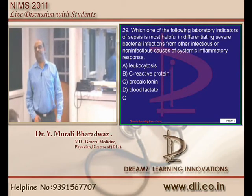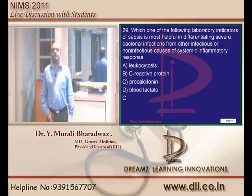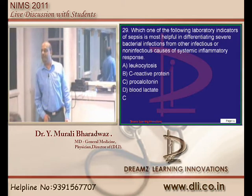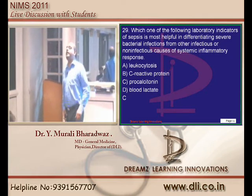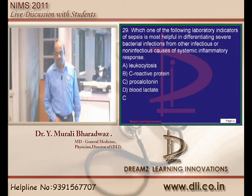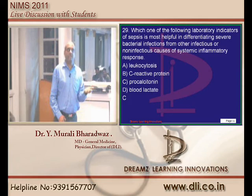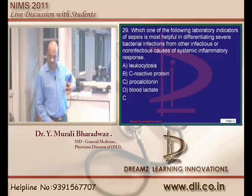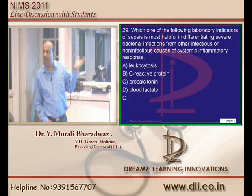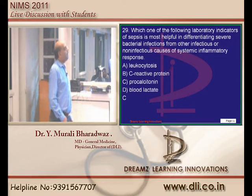Which laboratory indicator of sepsis is very helpful to differentiate bacterial and infectious causes from non-infectious causes leading to the development of systemic inflammatory response syndrome? Can you give me an example of a non-infectious condition which can lead to development of SIRS? You heard of ARDS - acute respiratory distress syndrome. Whenever sepsis or infectious causes are the underlying cause for developing non-cardiogenic pulmonary edema you call it ARDS, whereas if it is a non-infectious cause you call it SIRS. So is there any way to differentiate between the two?